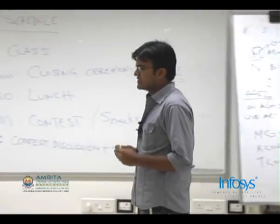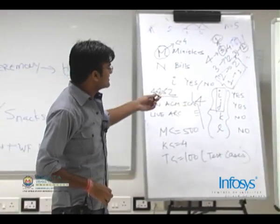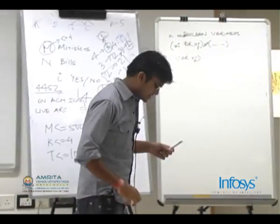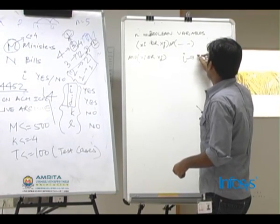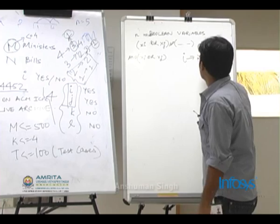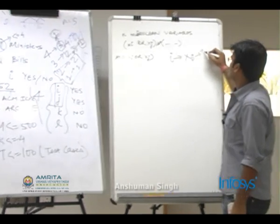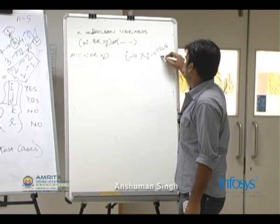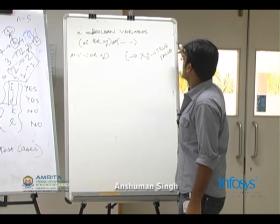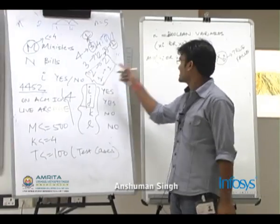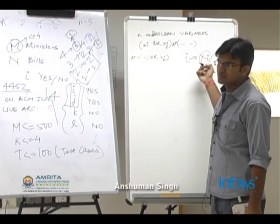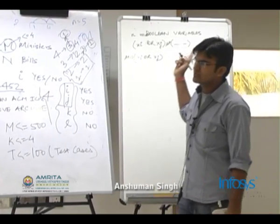So for those ministers, you assign values to XI or XI bar. So basically assume that for every bill I, we have a variable named XI. And XI can take value true or false. So for these ministers, you can directly assign XI a value if it was not assigned a value before.